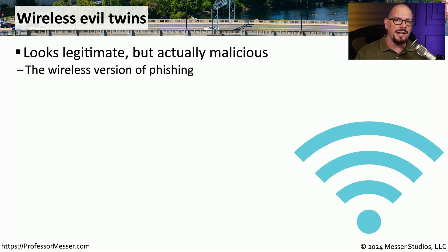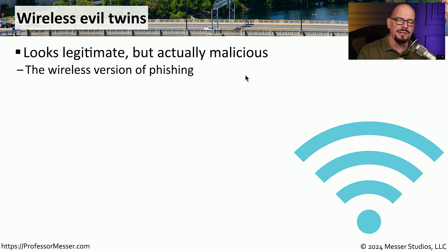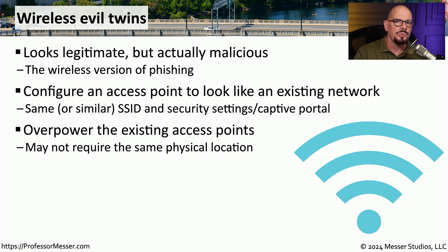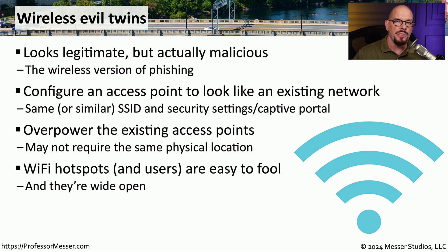If someone is connecting an access point for malicious reasons, we refer to that as a wireless evil twin. This combines phishing techniques with wireless networking technologies. A wireless evil twin is designed to look exactly like the wireless access points already installed at a location — with the same or similar SSID, similar security settings, or an identical captive portal configuration. Many wireless evil twins increase the output power of their radios to overpower nearby access points, making themselves the primary access point for anyone wanting to connect.